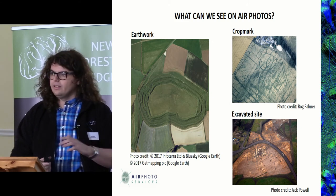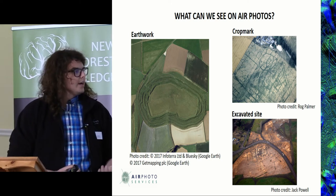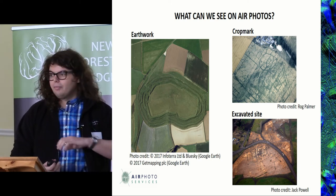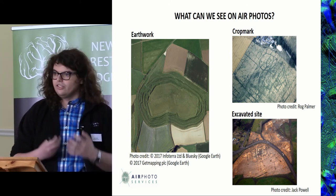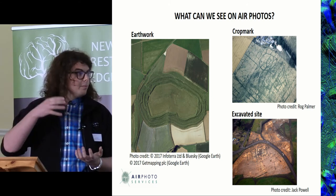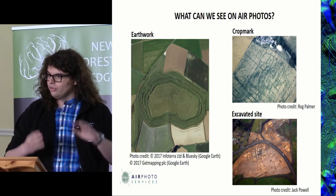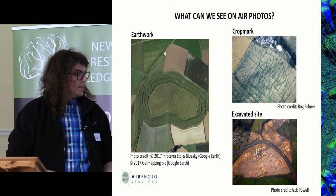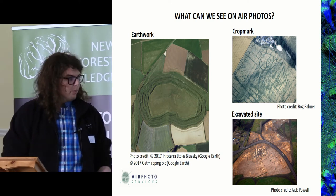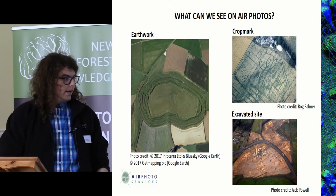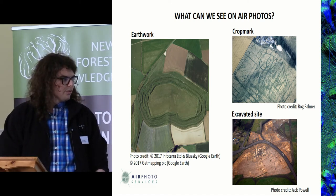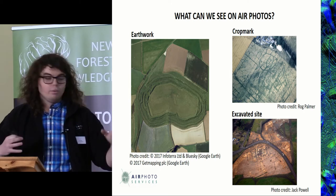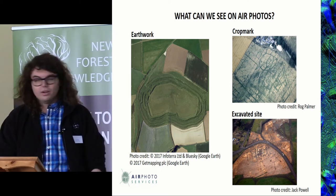Positive crop marks show denser growth where there are more nutrients. Negative crop marks, on the other hand, show stunted growth — for example where there are banked features, or a Roman villa with lots of hardcore and stone, which stops roots penetrating the soil and causes the crop to grow lower than the rest. A great example is when we flew over Cambridge in January — an archaeological excavation had removed the topsoil, showing the ditch fill that would cause crop marks when crops grow.